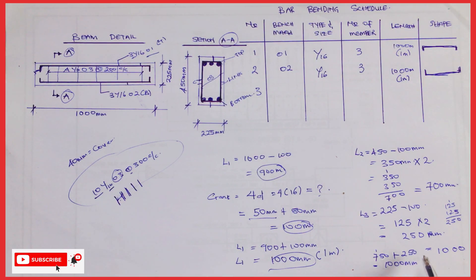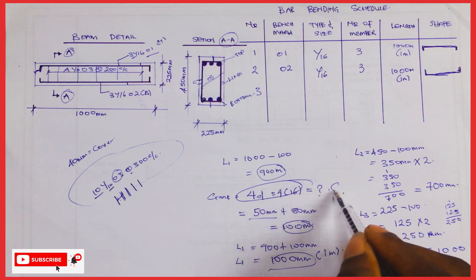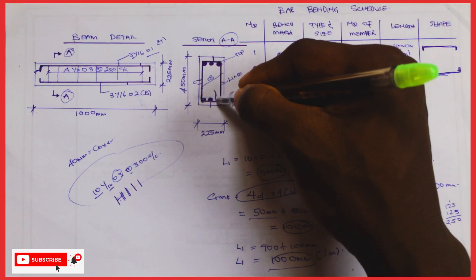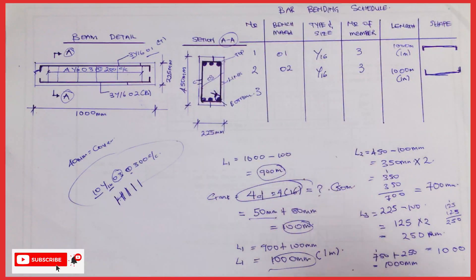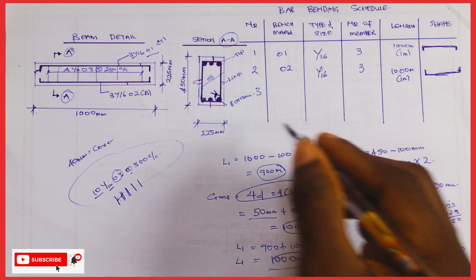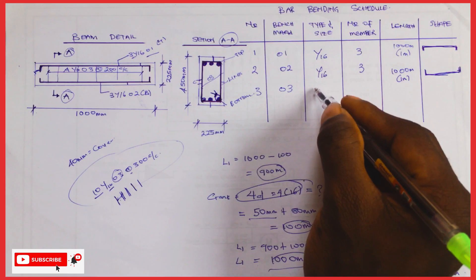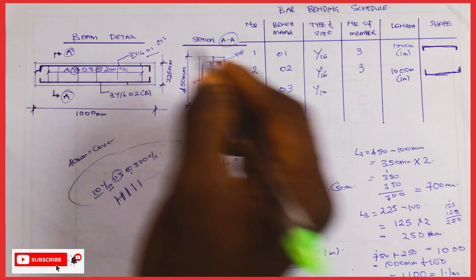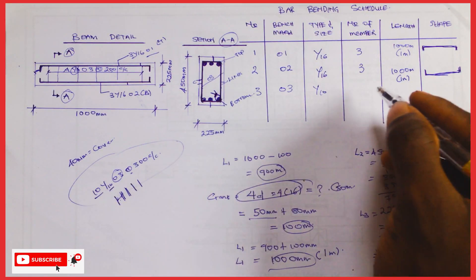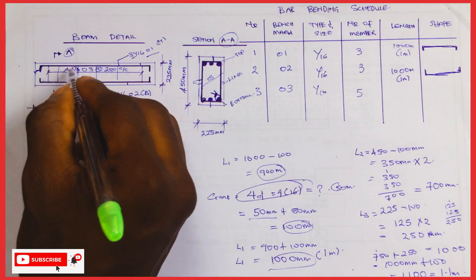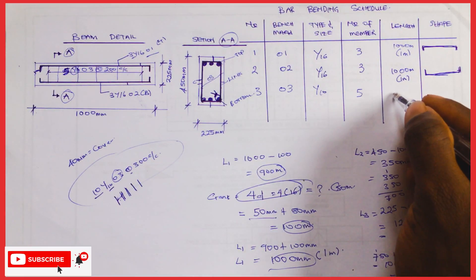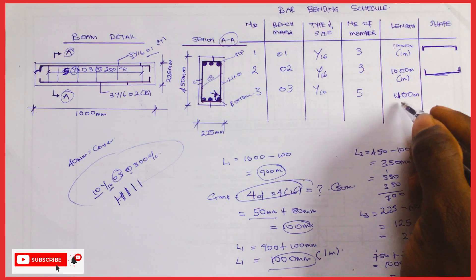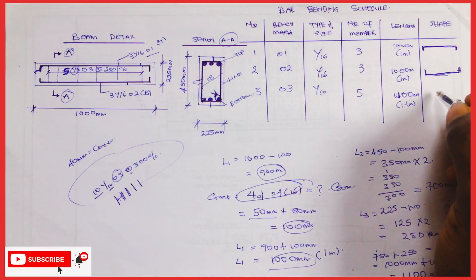For the cranking of the link, the formula is 4d but we're making a provision of 50mm. We're adding 100mm for the cranking, so the total length is 1000 plus 100 equals 1100mm, which is 1.1 meters. Bar mark 03 is Y10, and 5 links are needed. So we put Y10 for type and size, 5 for the number, and 1.1m for the length.